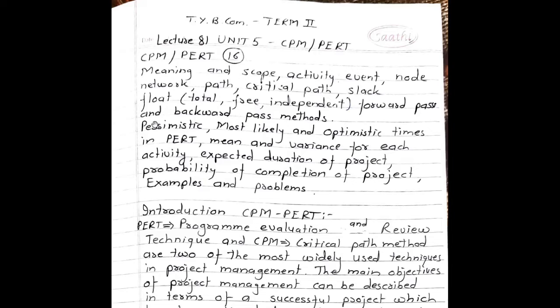Forward Pass and Backward Pass methods, Pessimistic, Most Likely and Optimistic Times in PERT, Mean and Variance for Each Activity, Expected Duration of Project, Probability of Completion of Project, Examples and Problems.